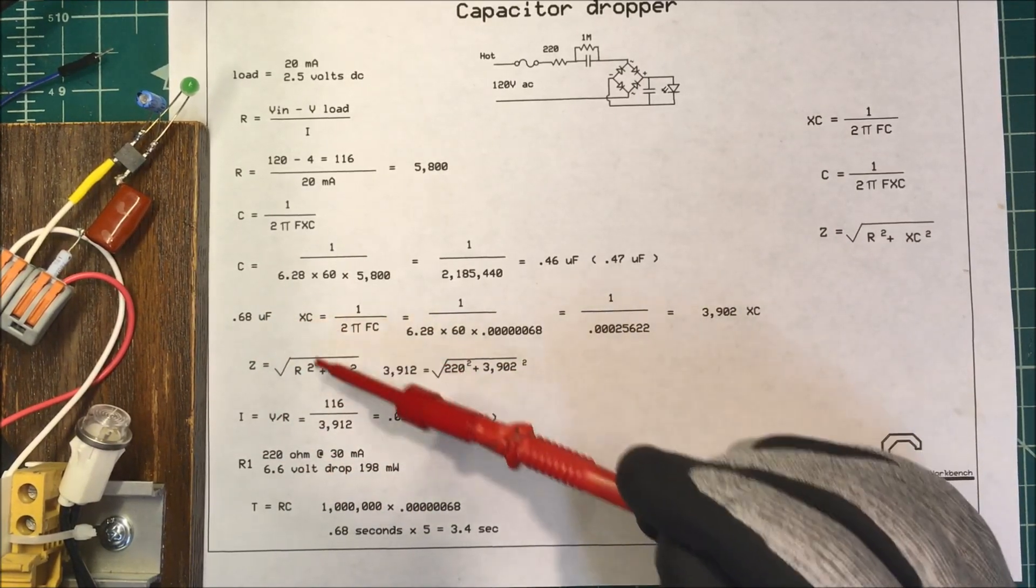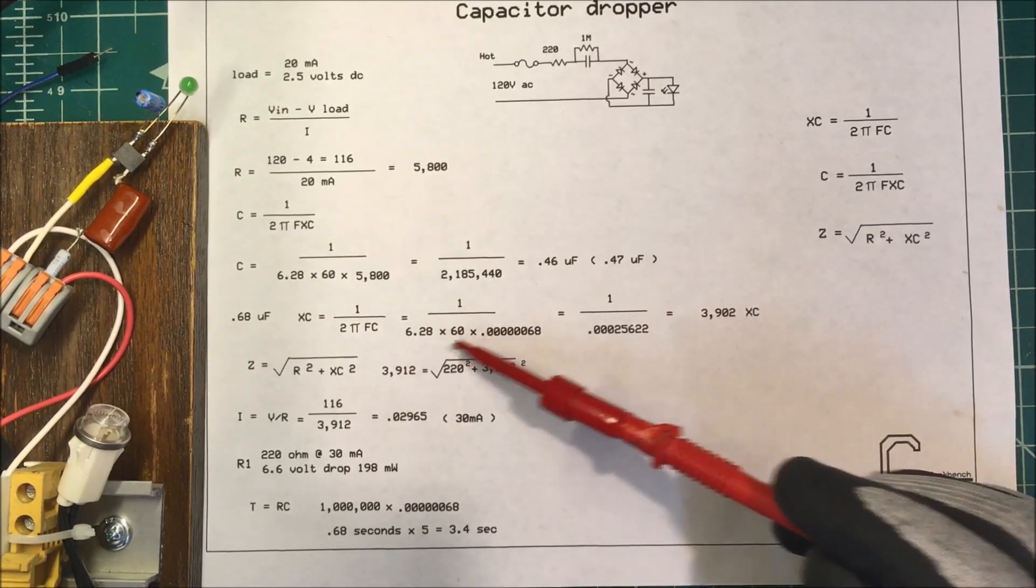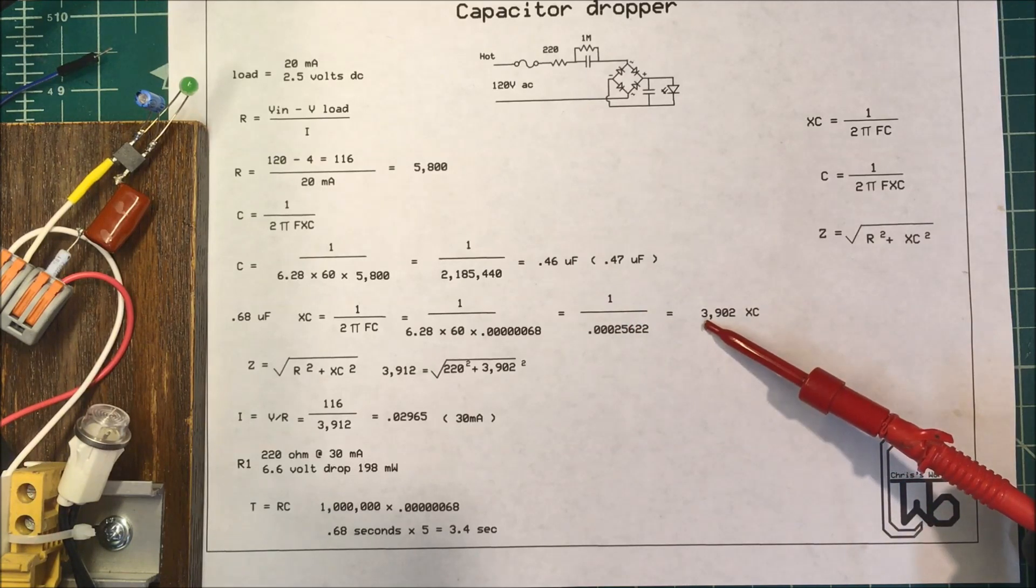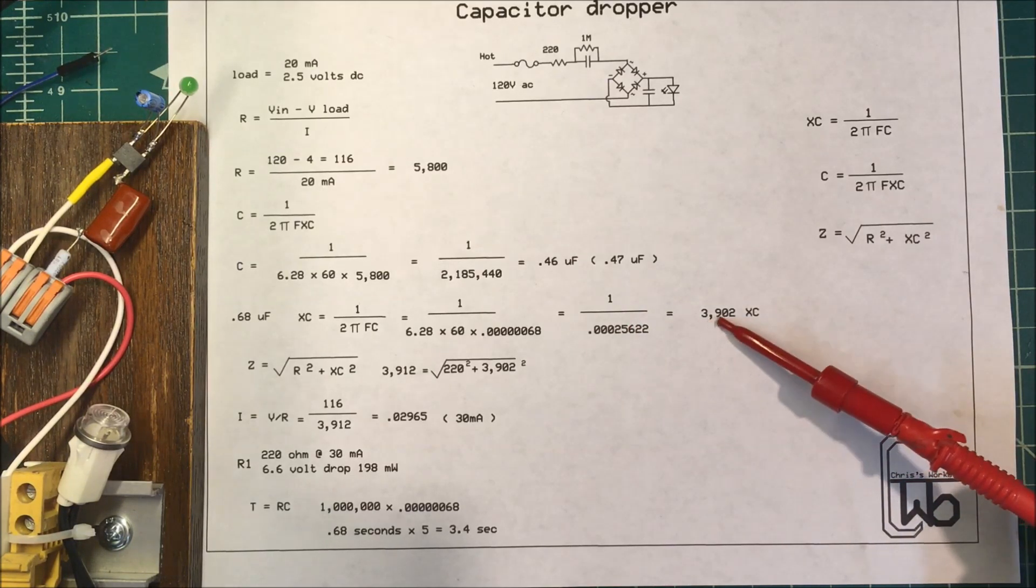So the capacitive reactance of that at 60 hertz is going to be, if you take this formula and calculate it out, it's going to be 3,902.